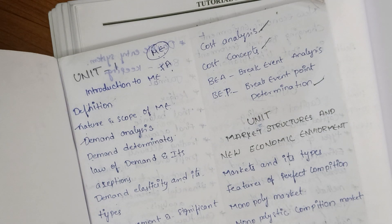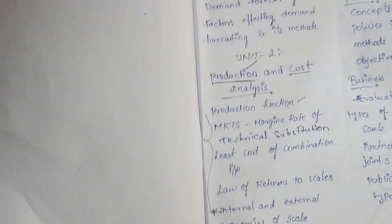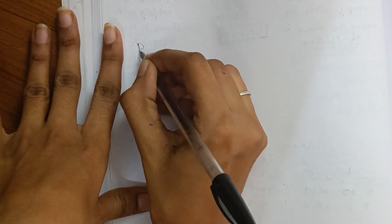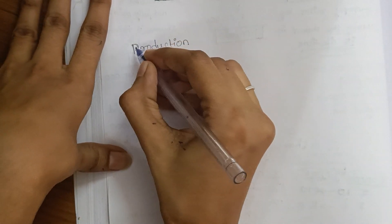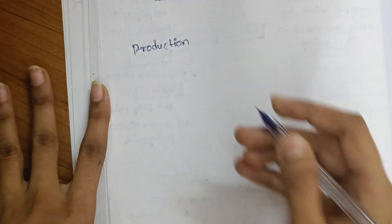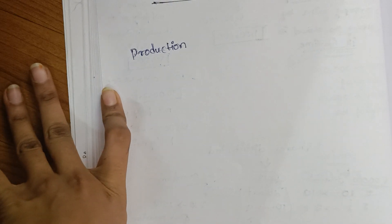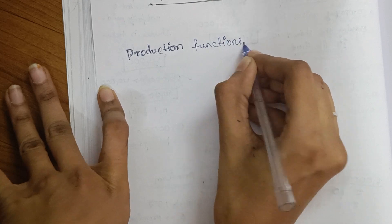First, in part one, we will go through the production function. What is production? As we all know, we are seeing production in our daily lives. Whatever products a company or factory is going to release into the market for sale and to earn money — that is called production. It has some functions, called production functions.